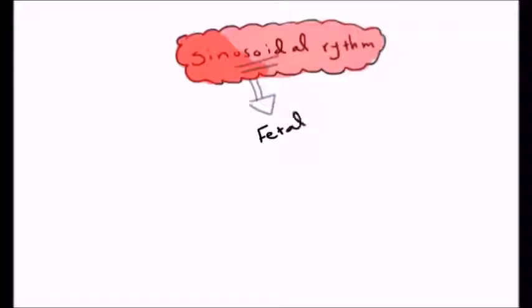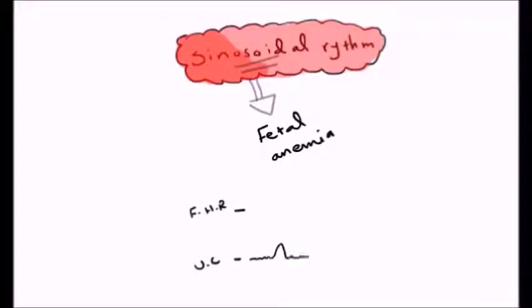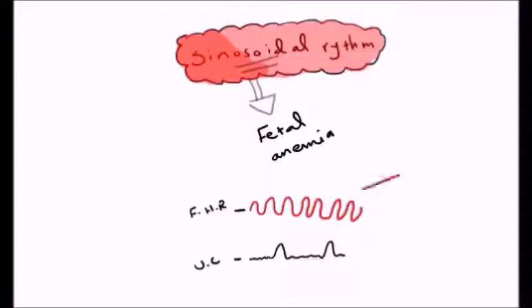We also have something called sinusoidal rhythm, which indicates fetal anemia. On the CTG paper, the fetal heart rate will appear as a smooth wave pattern. I don't have a full explanation for this pattern, so if you have an explanation you can leave it in the comment section below.